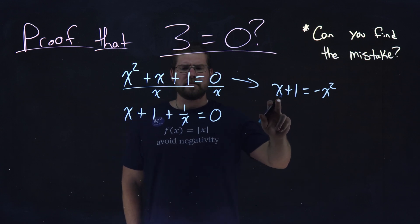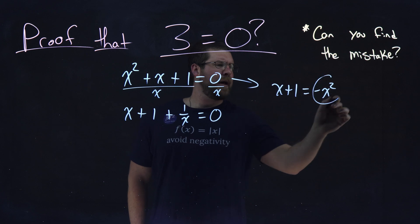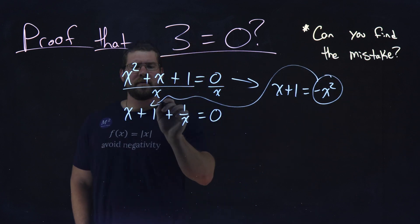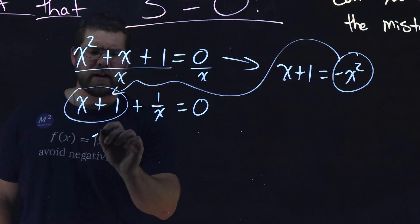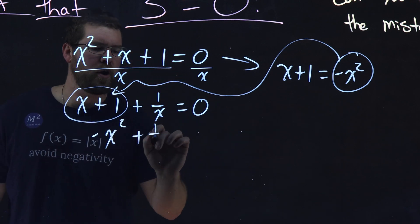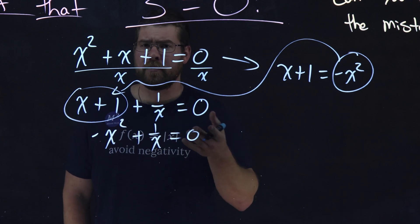Well, x + 1 equals -x². So we've got that right here. Let's substitute it in for this x + 1. So we have -x² + 1/x = 0, and clearly I haven't done anything wrong.